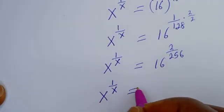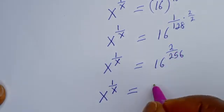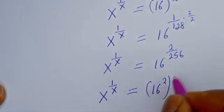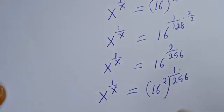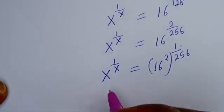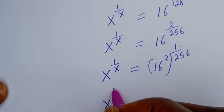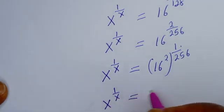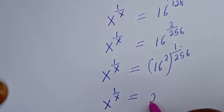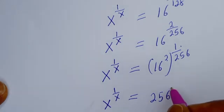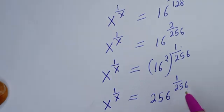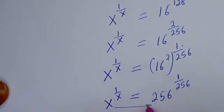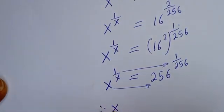This can be written as 16 squared, to the power of 1 over 256. And we have s to the power of 1 over s is equal to 16 squared, that is 256, to the power of 1 over 256.